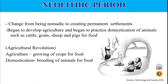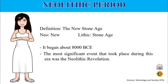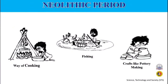The Neolithic revolution changed humans from being nomadic to creating permanent settlements. They began to develop agriculture and practice domestication of animals such as cattle, goats, sheep, and pigs for food. Neo means new, and lithic means stone age. The Neolithic period began about 8,000 BCE, and the most significant event of this era was the Neolithic revolution. The image shown illustrates the way of living during the Neolithic period.